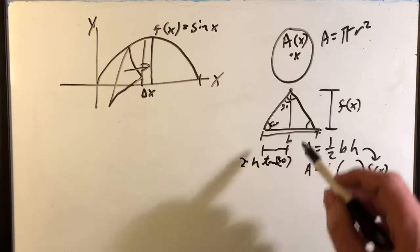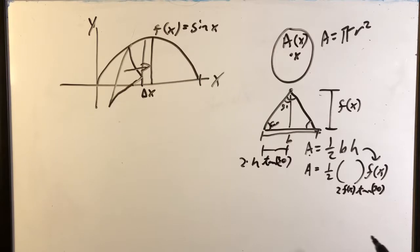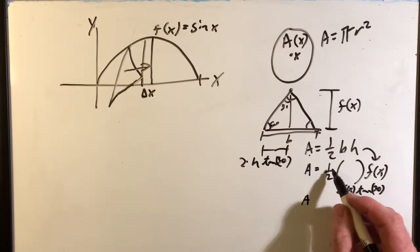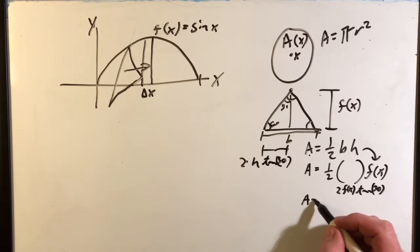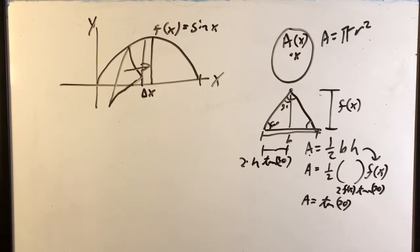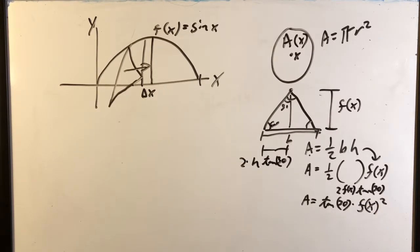So typically it would have been easier if this was a 3, 4, 5 triangle or something like that, but let's just stick with it. So my area is going to be, the one-half and the two are going to cancel each other out. So I'm going to have tangent 30, which is actually 0.57 times f of x squared.